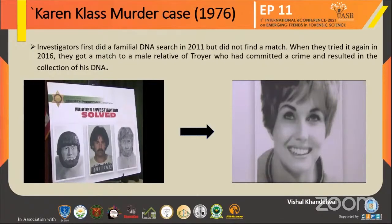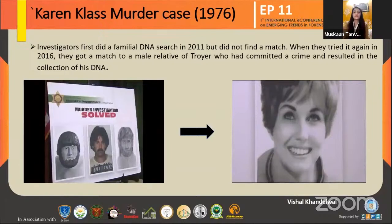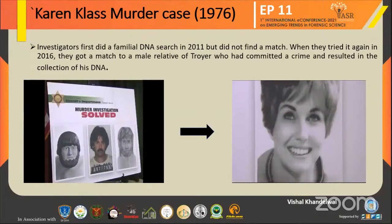By 2016, a new familial DNA technique was developed. By this method, the accused was identified — his name was Trier. However, the motive was not established, because Trier had been shot dead by the police in 1982, as he was linked to another case and was confronted by police.